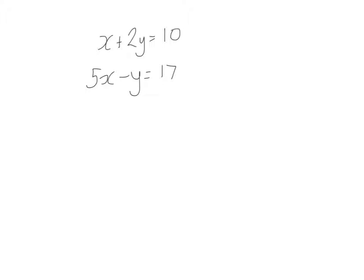We're going to develop simultaneous equations a bit further. Before, we've always seen variables with a unitary coefficient — that means just an x on its own, not a 2y or a 5x. We're going to approach this similarly but just need to take a bit more care. We're calling this equation one and this equation two. Our strategy is always to eliminate a variable. Comparing the variables, we've got x and 5x, so we can't just add the two equations together — we'd still have x's and y's.